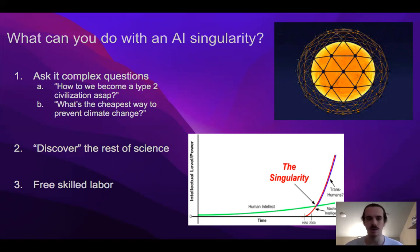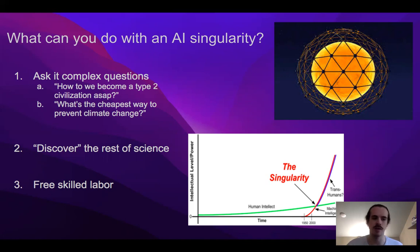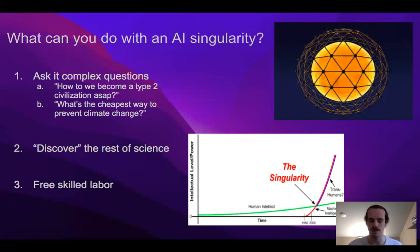So it's in our best interest to become a type 2 civilization as soon as possible. We could ask the AI various questions and get useful answers — like what's the cheapest way to prevent climate change. If we're talking about an AI singularity that has reached the finish line, it will give us the correct answer because it will be able to simulate all the possibilities, simulate physics, and do all the engineering on its own, leaving us to just check its work and implement it.